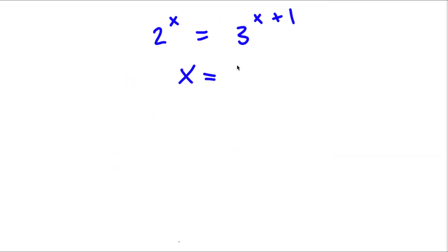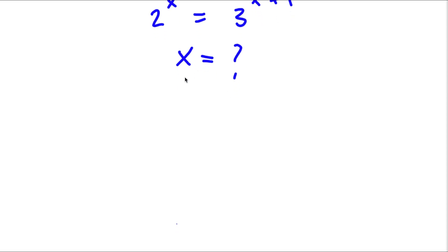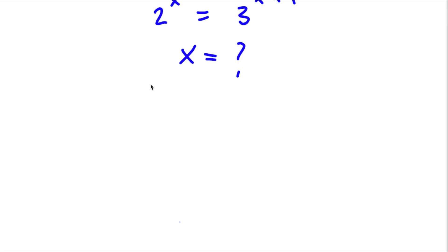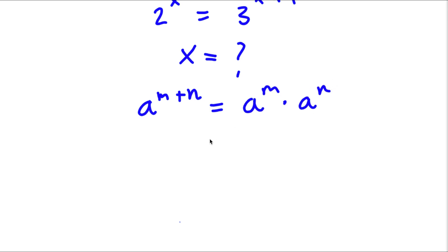So right here, we want to find the value of x. First off, if I have something in the form a to the power of m plus n, this is equal to a to the power of m times a to the power of n. So in this case, a is equal to 3, m is equal to x, and n is equal to 1.